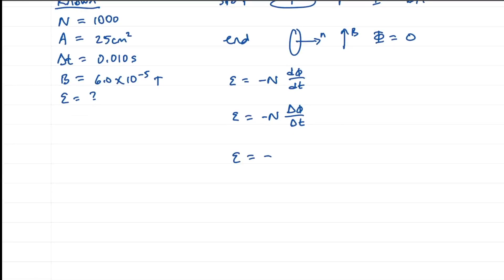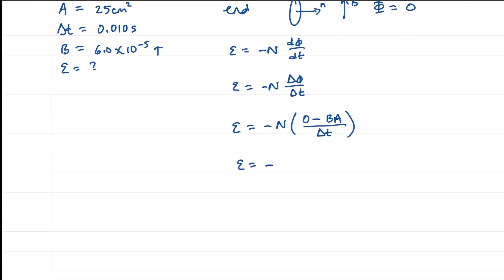So we have minus N. The flux at the end is zero, the flux at the beginning is B times A, and this is over delta T. And so we have minus 1,000, then we have another minus, so that makes a plus.